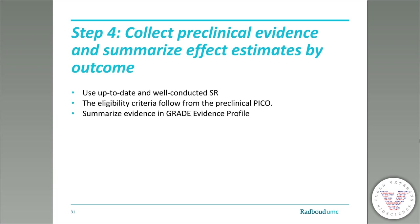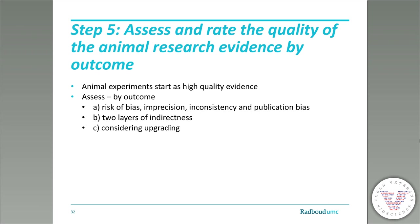In Step 4, we collect preclinical evidence and summarize effect estimates by outcome. The optimal application of GRADE requires an up-to-date and well-conducted systematic review, with eligibility criteria following from the preclinical PICO question, and all evidence summarized in an evidence profile. In Step 5, we assess and rate the quality of the animal research evidence by outcome. In our approach, animal experiments start as high-quality evidence, and inadequate or lack of randomization is part of the risk of bias assessment. We assess the GRADE downgrading factors — risk of bias, imprecision, inconsistency, and publication bias — subsequently followed by two layers of indirectness, and then consider whether upgrading is still possible.